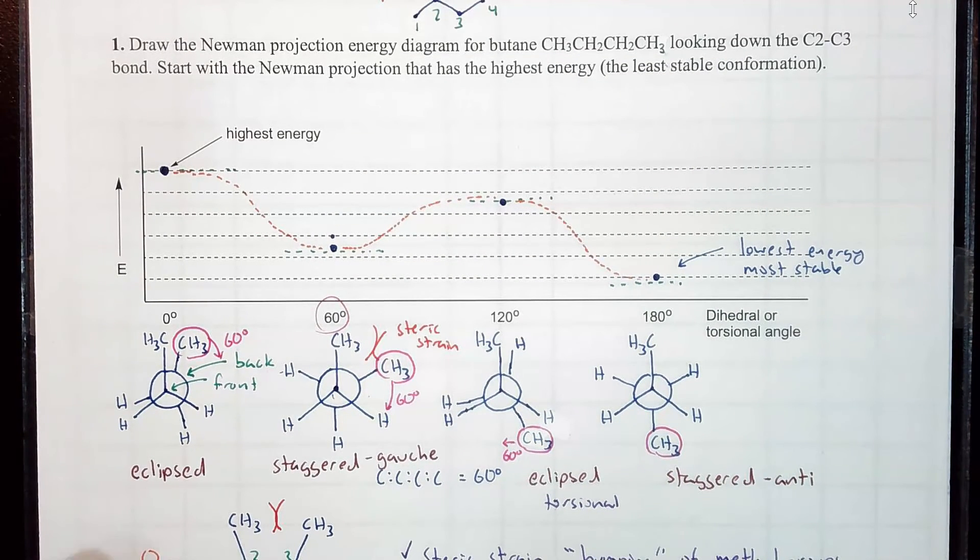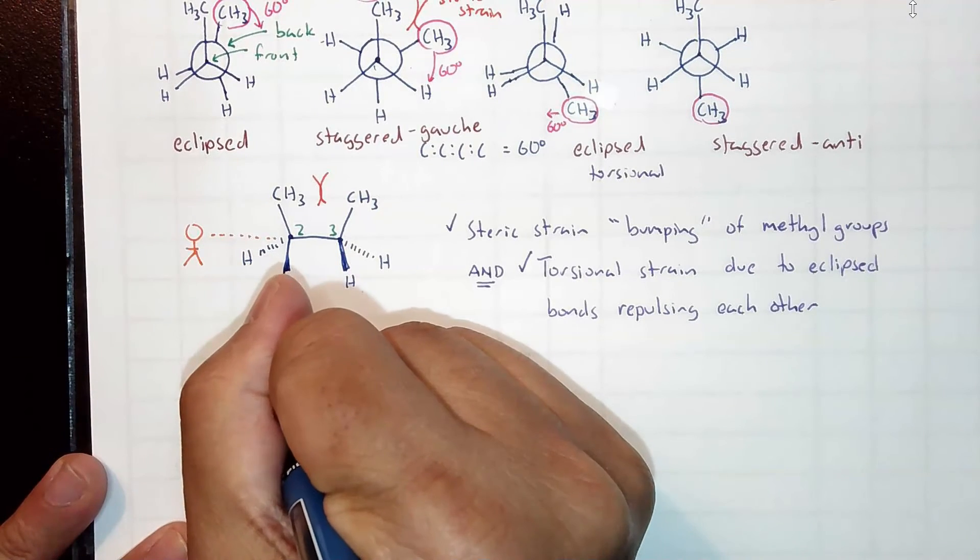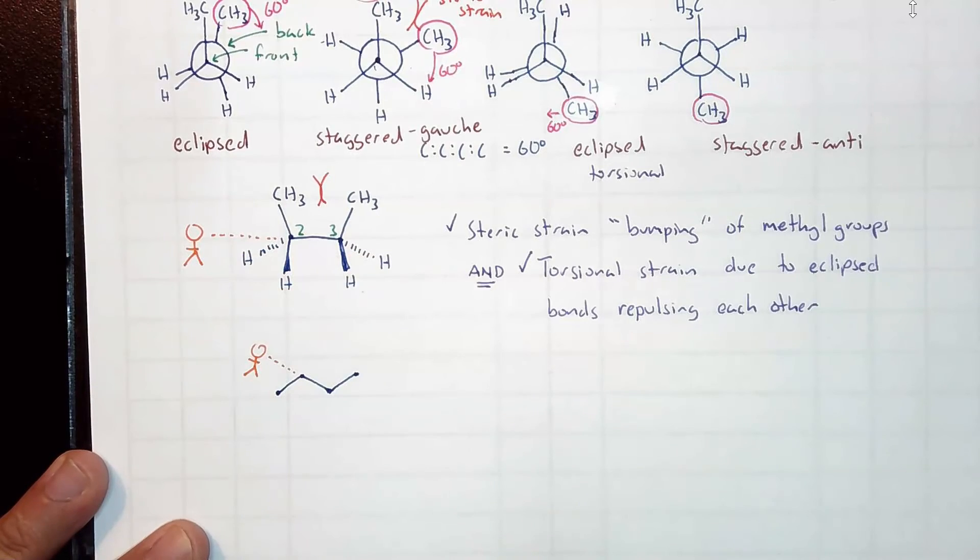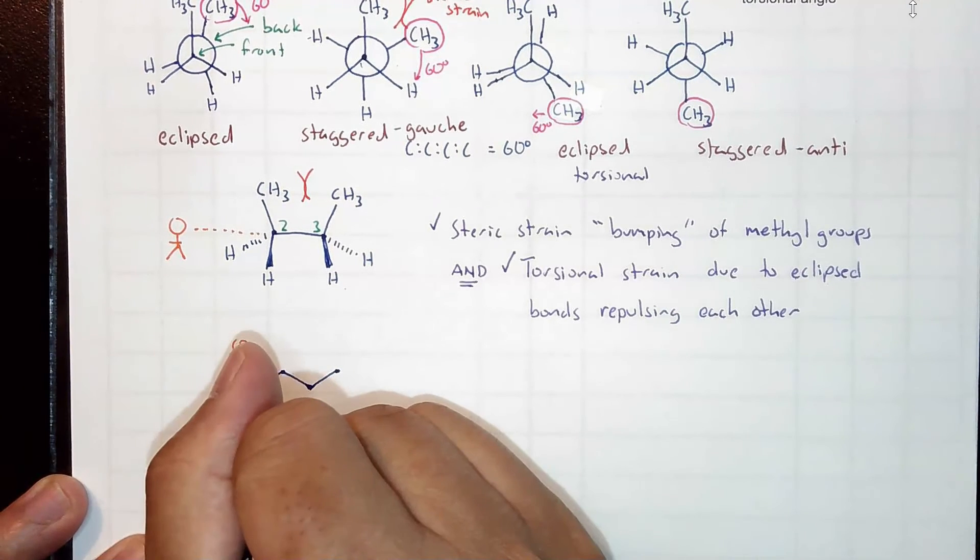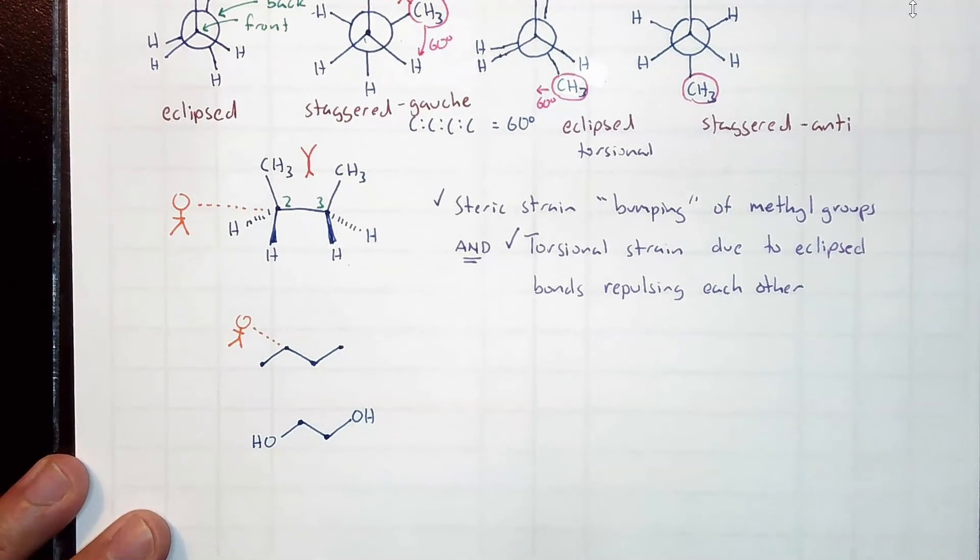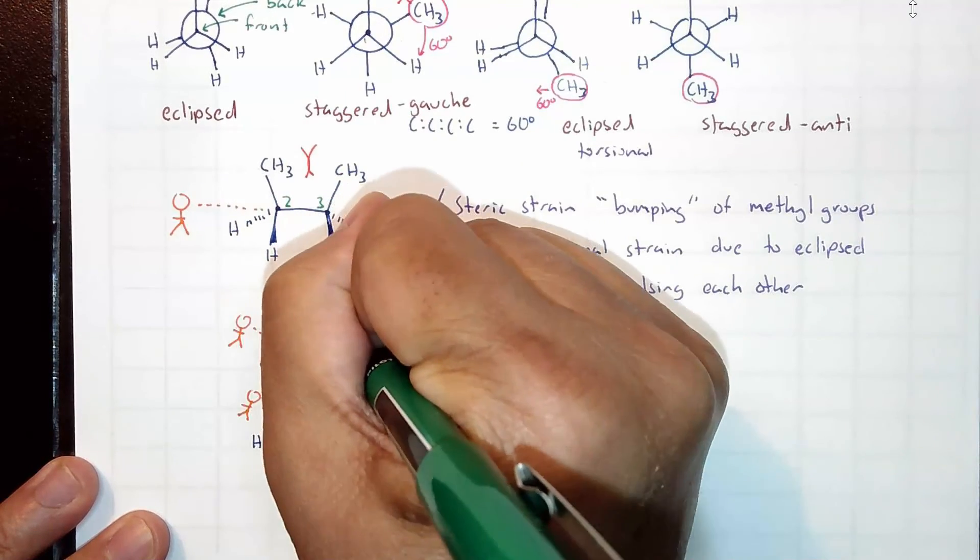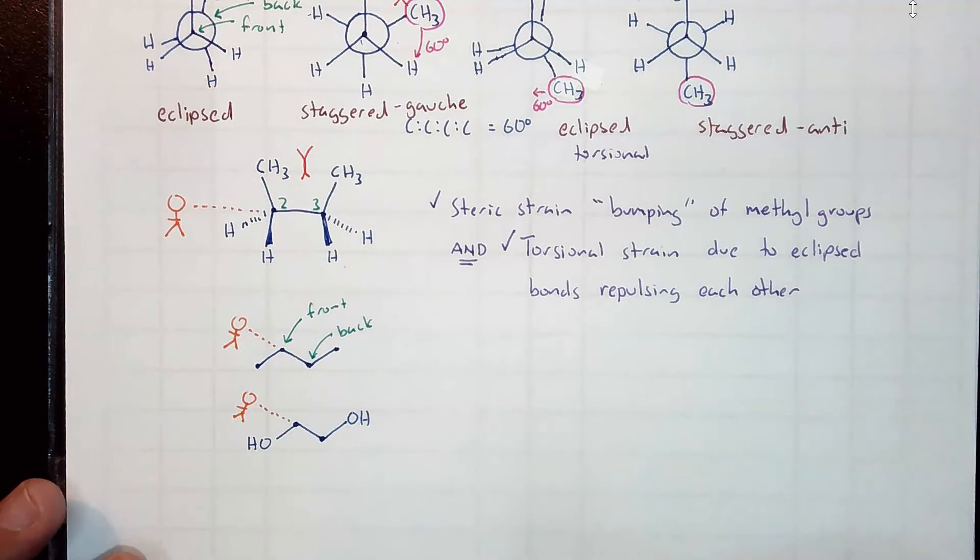This energy diagram, where you have two different staggers and two different eclipses, that is for butane. And again, your stick figure is looking down the two middle carbons like this. What are some other molecules that could potentially have the same shape as butane? Well, you could have something like OH groups, alcohol. And we have this. And again, look down the two middle carbons. We only have two carbons in this case. Down like that, the front carbon and the back. But do not memorize. Do not memorize the height of the hill or the depth of the valley. Look at each molecule on a case-by-case basis.